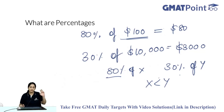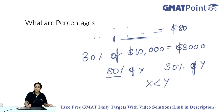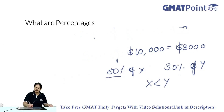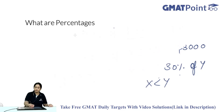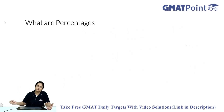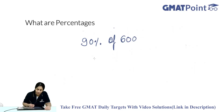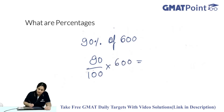Always remember: percentages represent standardized fractions, and X percent of Y essentially represents the product of a fraction with a total absolute number. For example, if a person scored 90% on an exam with total marks of 600, that means 90% of 600 = (90/100) × 600 = 540.